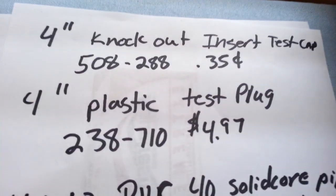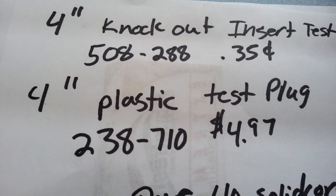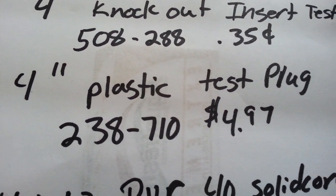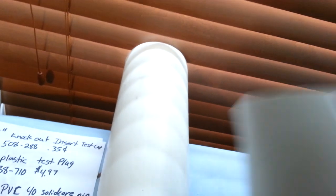Next we've got the 4-inch plastic test plug. SKU number is 238710. Remember, that's at Home Depot and it's $4.97. Now this guy here, they come in 1-inch, 2-inch, 3-inch, and 4-inch. What it is, is it squeezes down and it has a rubber gasket here that expands to give you a watertight seal.